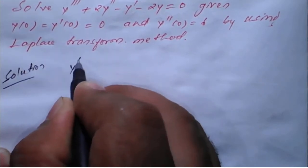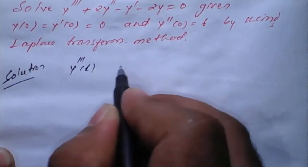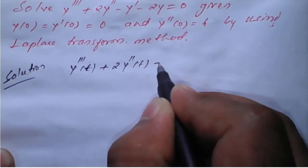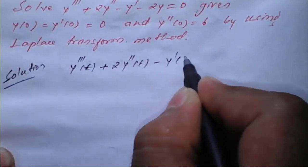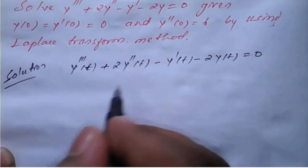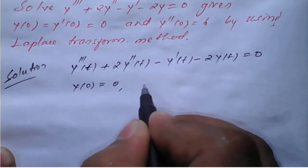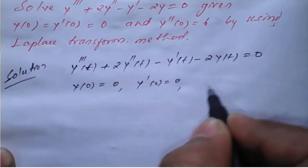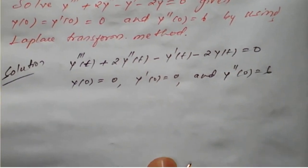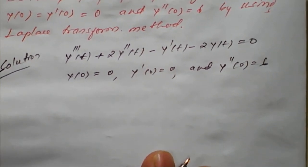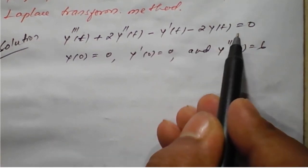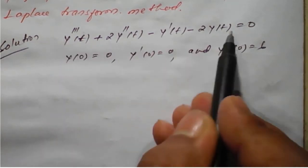The given differential equation is y triple dash of t plus 2 times y double dash of t minus y dash of t minus 2y of t equal to 0. The initial conditions given are: y of 0 is equal to 0, y dash of 0 is equal to 0, and y double dash of 0 is equal to 6. The equation is already in standard form, so we need to take Laplace transform on both sides.